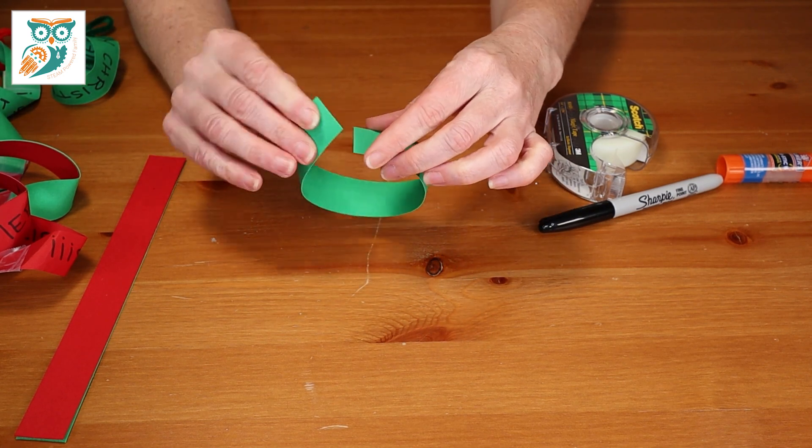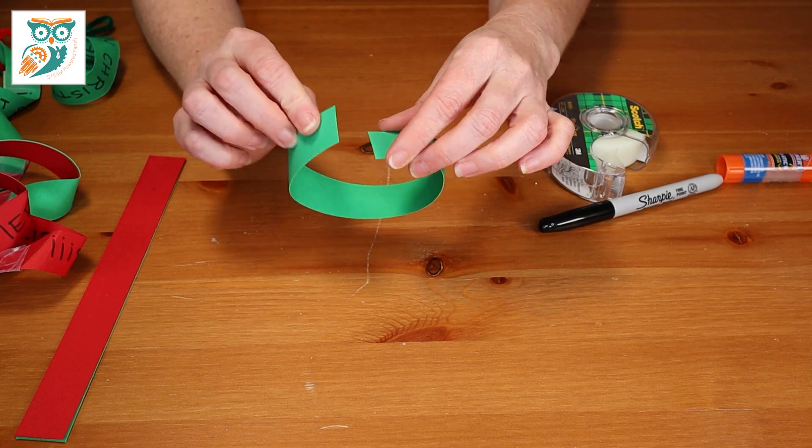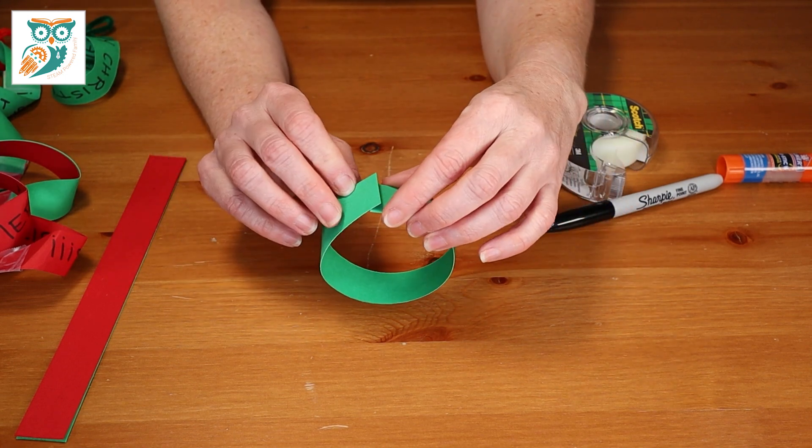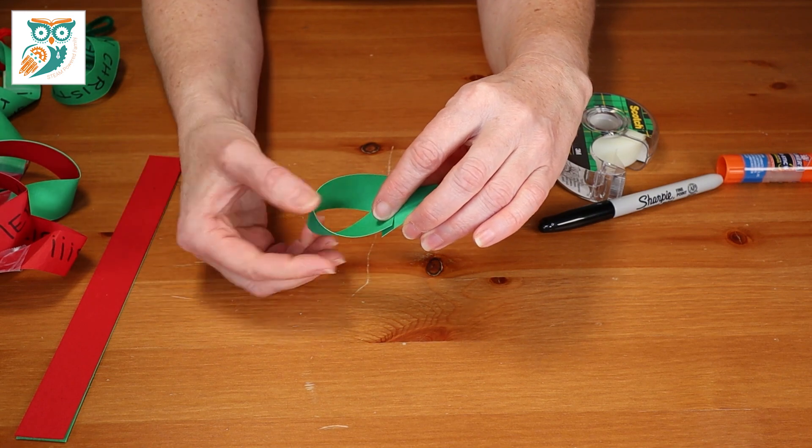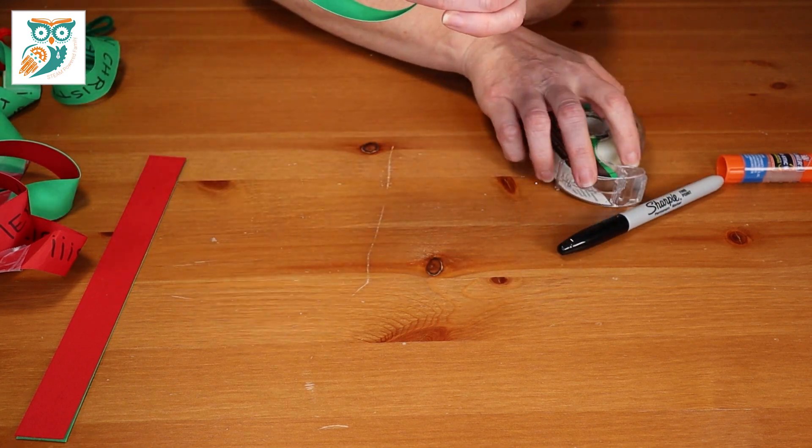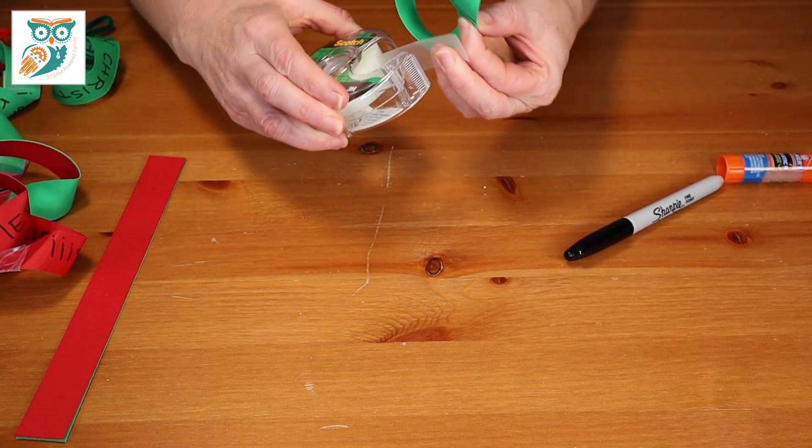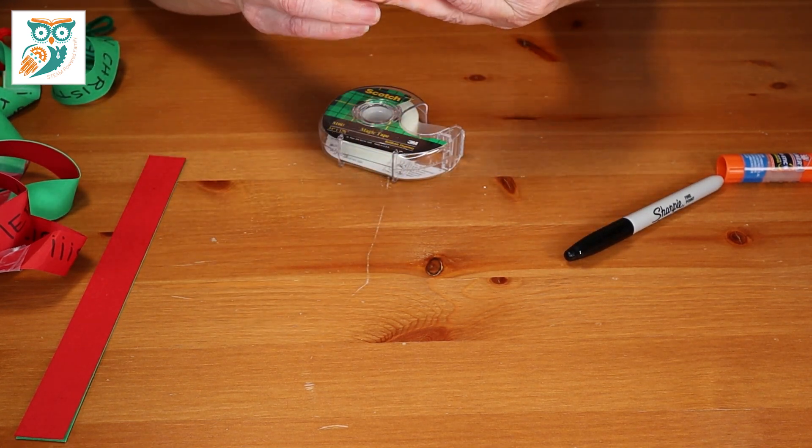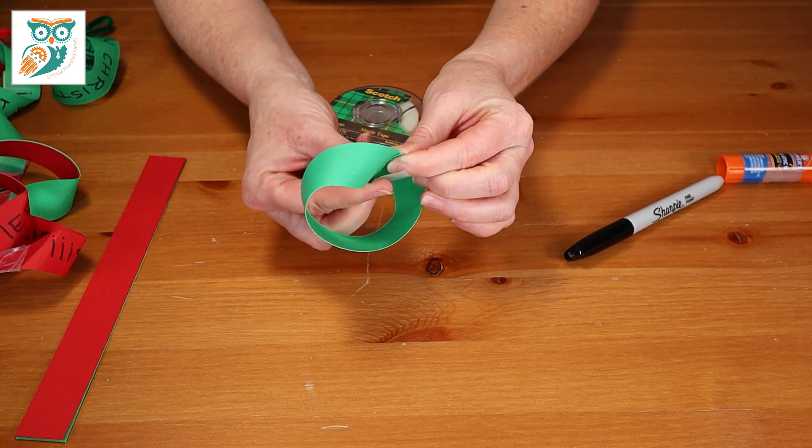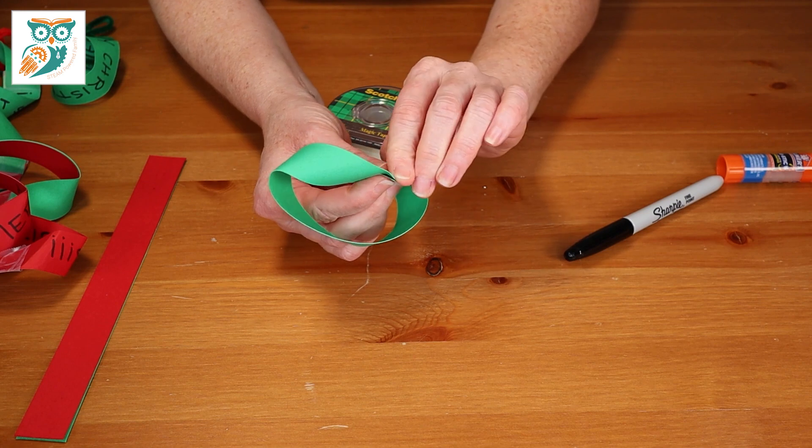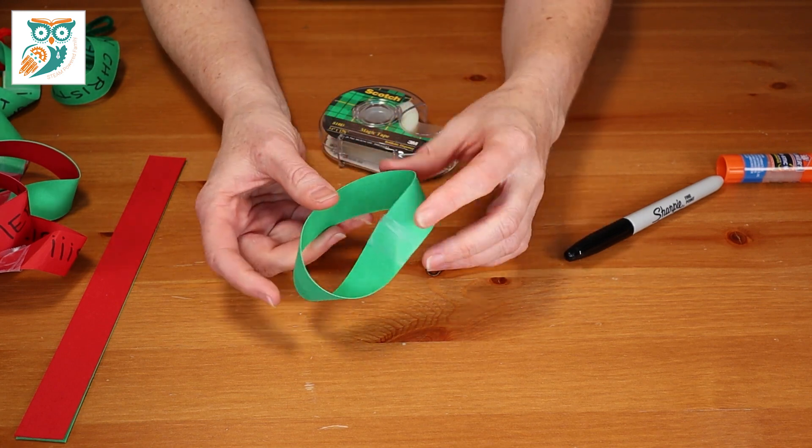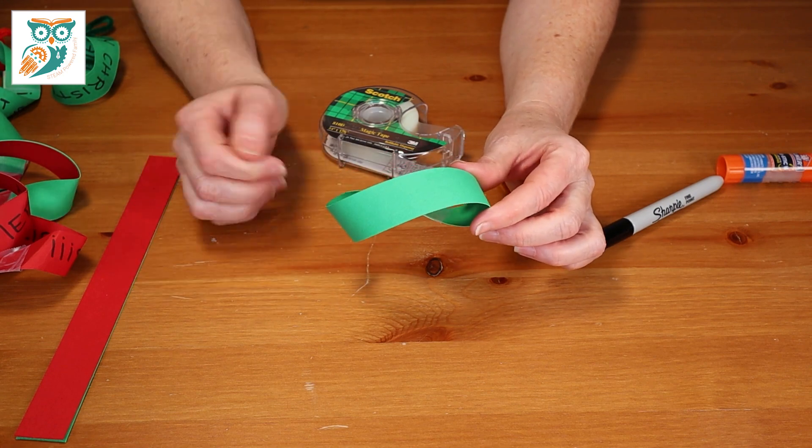But if we take it and do one twist. So all I'm doing is taking it, right? Holding both ends and doing a flip. That's all. And then if I tape that together. We now have a Mobius Strip.